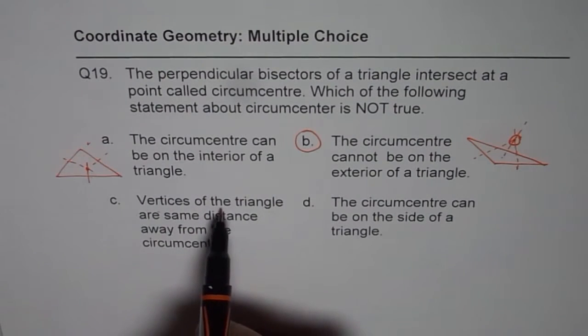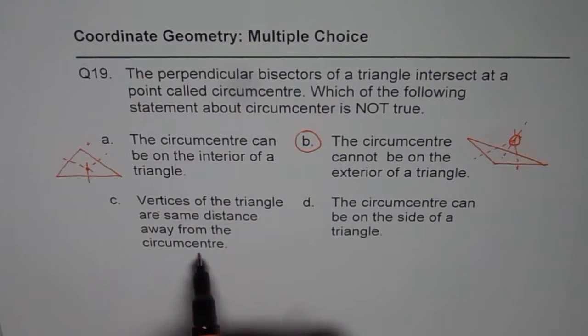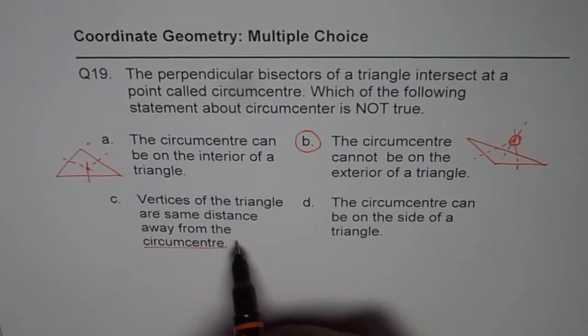Vertices of the triangle are same distance away from the circumcenter. That is why it is called circumcenter. This is correct.